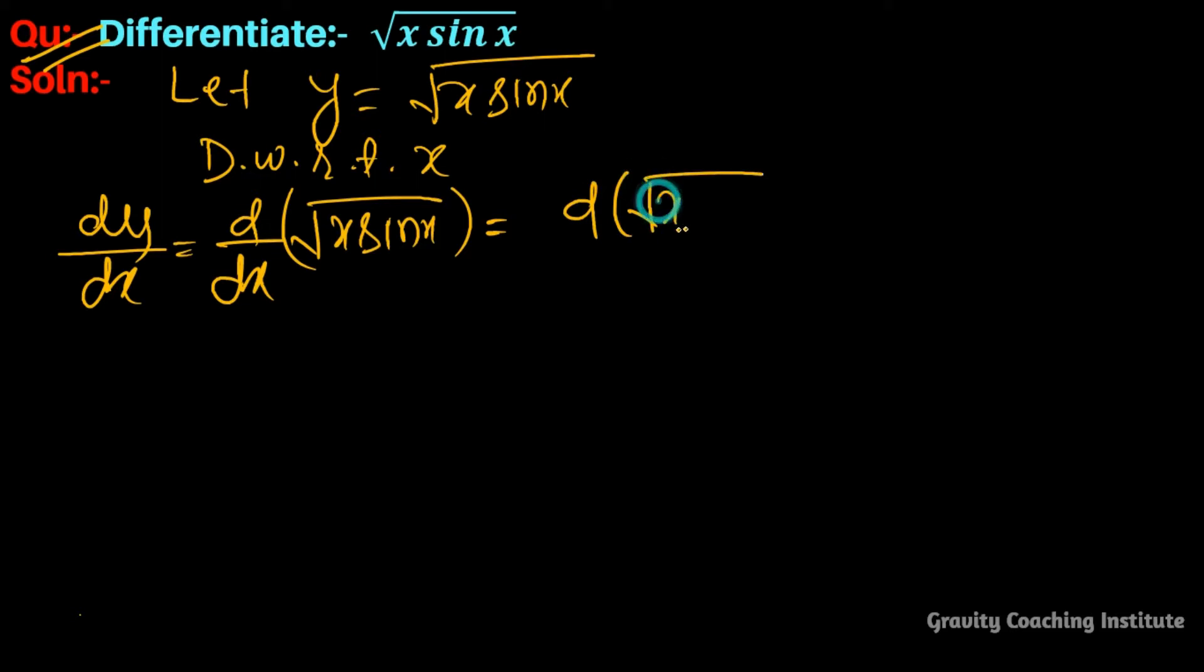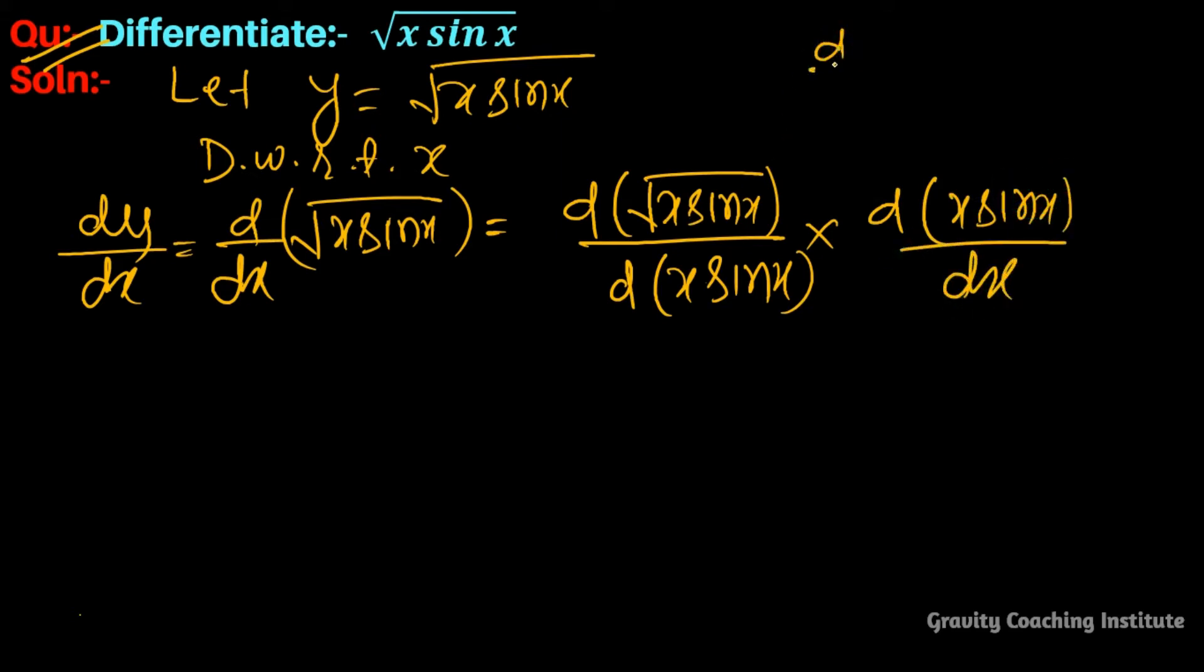General rule: d/dx of √(x sin x) equals d(√(x sin x))/d(x sin x) times d(x sin x)/dx. The differentiation of √x, if we differentiate √x, will be 1/(2√x).